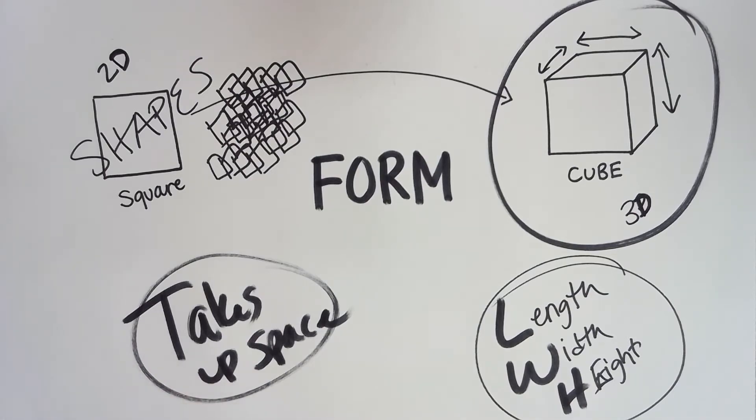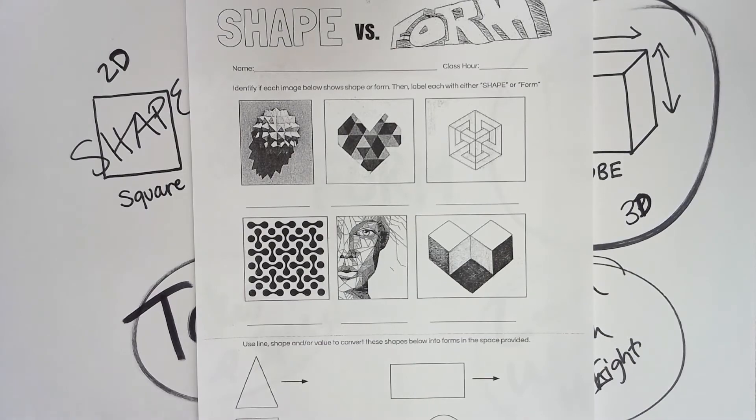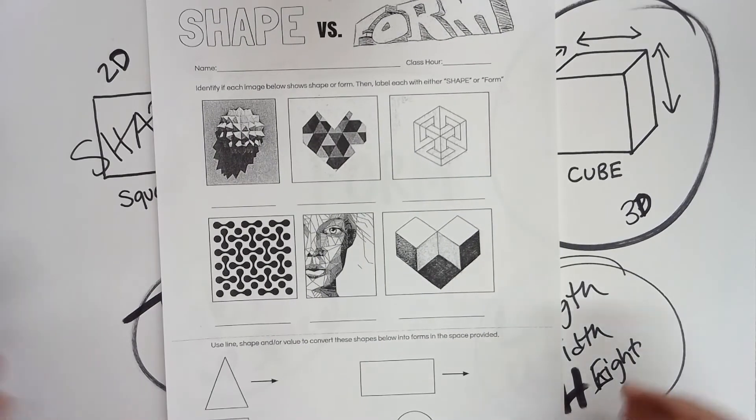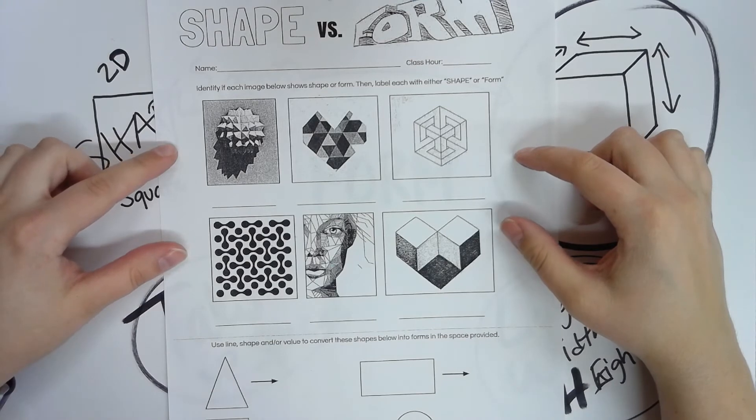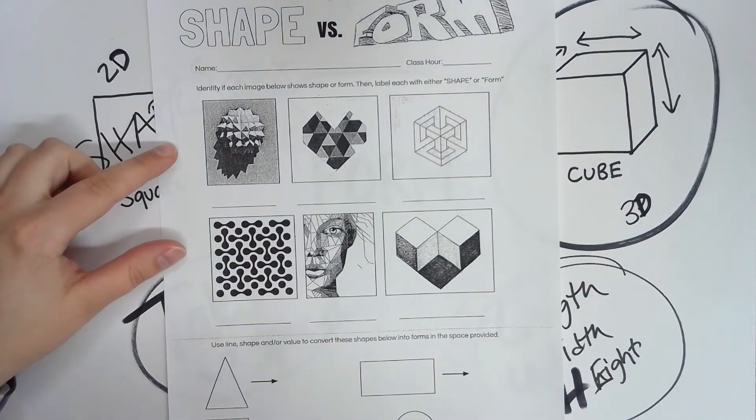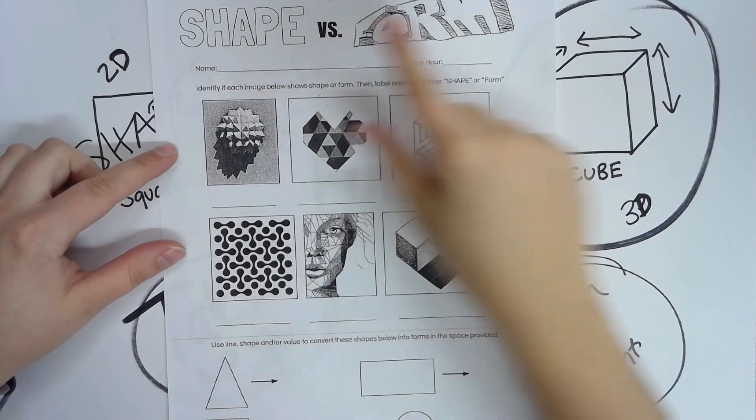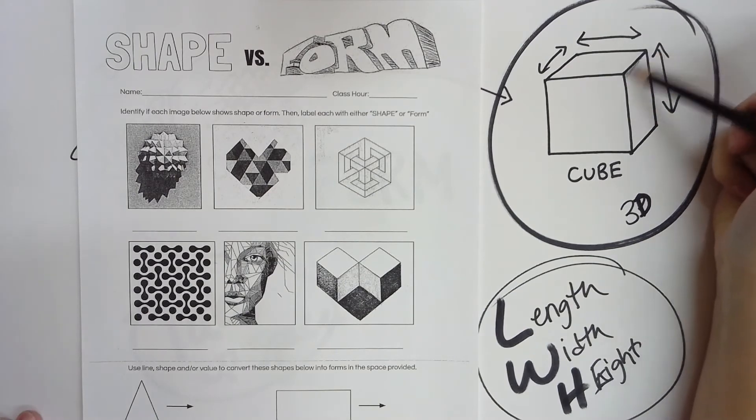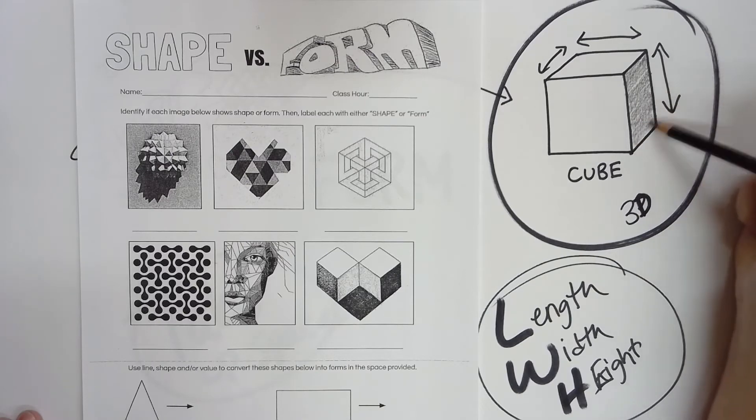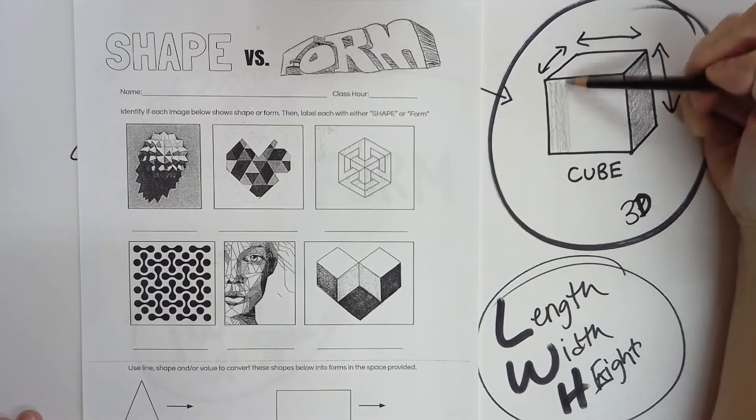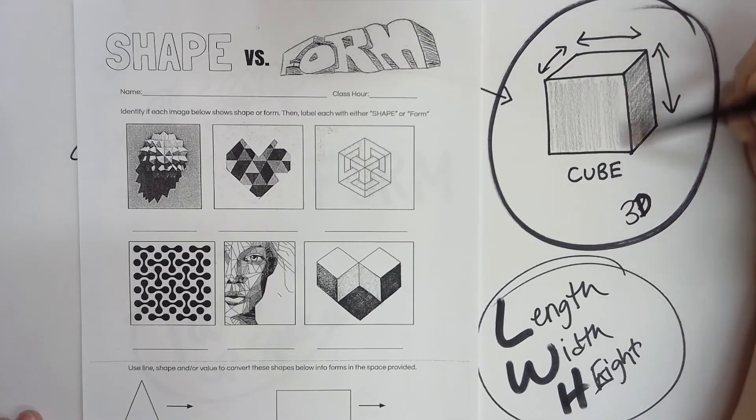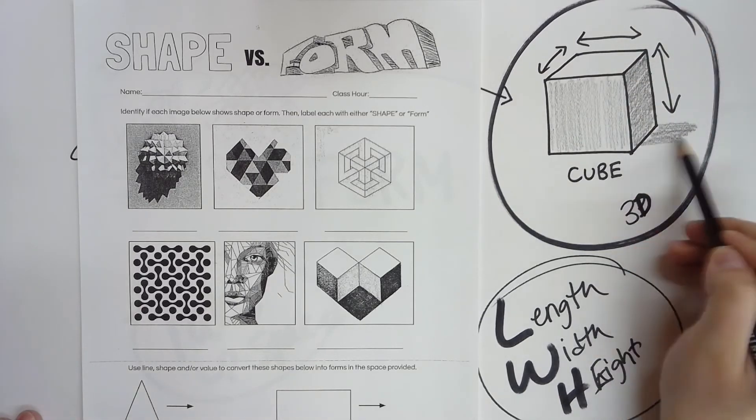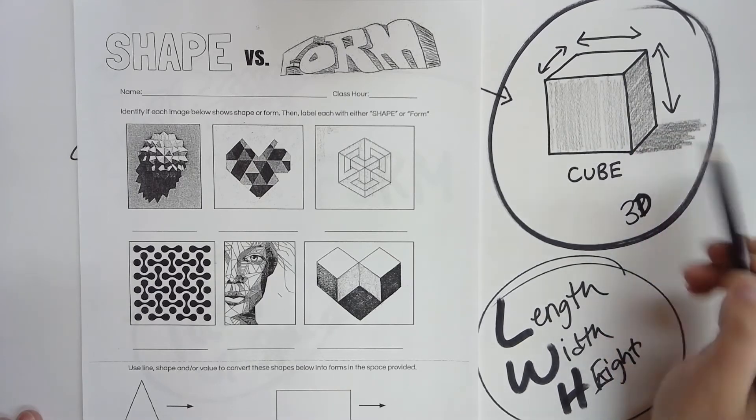In your exercise, you are comparing and contrasting shapes and forms. In the first half, you have six different images, and you are to identify whether or not they are an illustration of shape or an illustration of form. Now, one of the big things that can set off the difference between shapes and forms can be value. By creating the illusion of space and the illusion of depth by having value, I also can create the illusion of form.